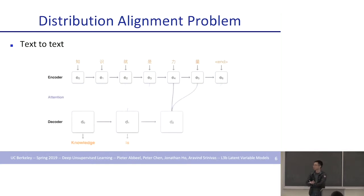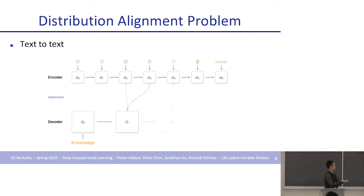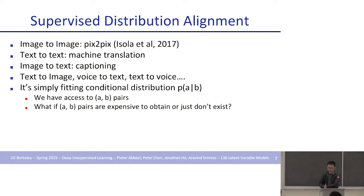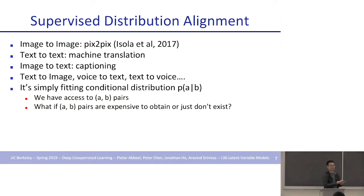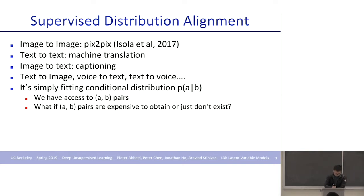Distribution alignment problems also happen in text. The most straightforward example is machine translation — translating a sentence or paragraph from one language to another. You can think of there being a distribution of English text and a distribution of Chinese text, and the question is how do you align these two things. When this kind of distribution alignment problem is supervised, they are relatively easy — it basically reduces to semantic segmentation, image-to-image translation, or machine translation. It really just boils down to fitting a conditional distribution.